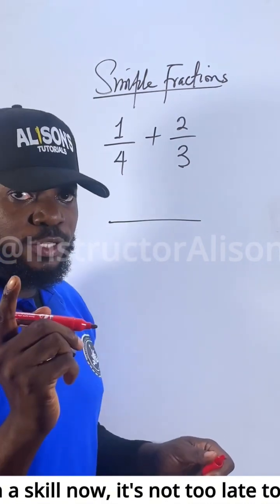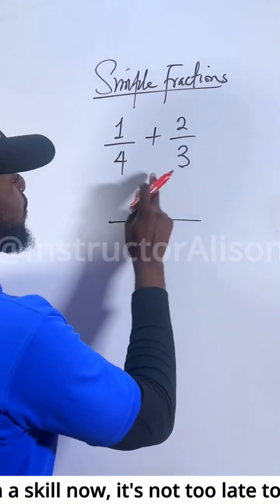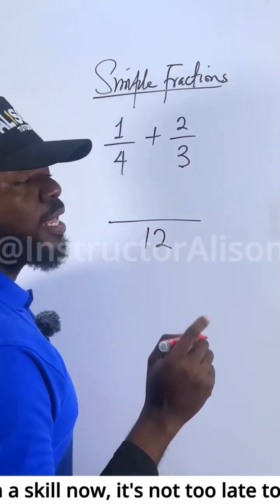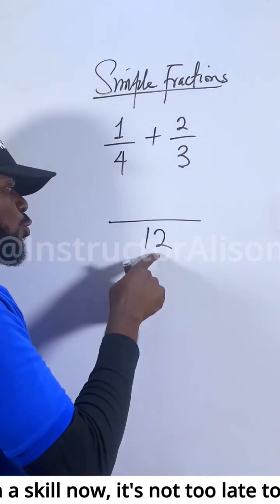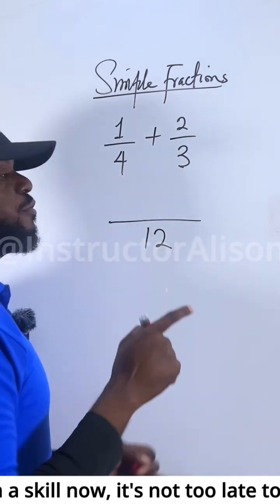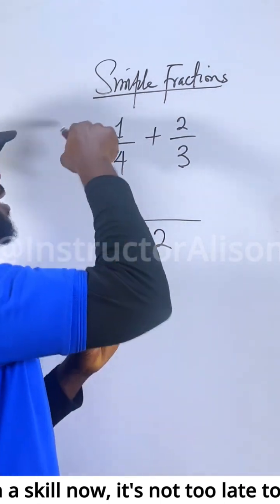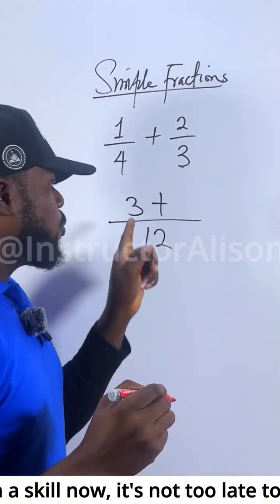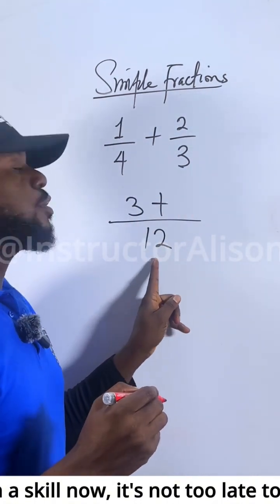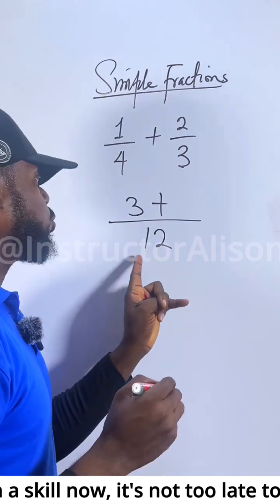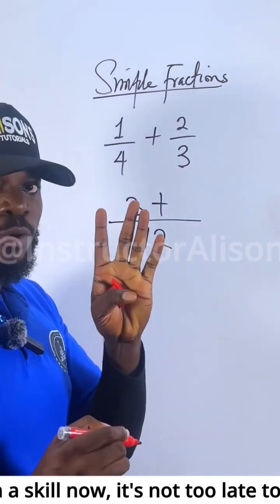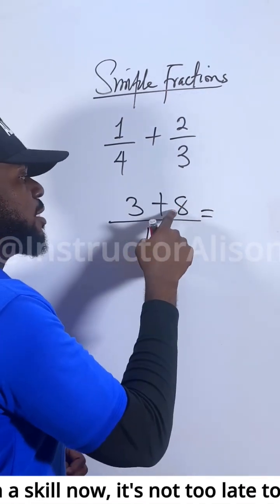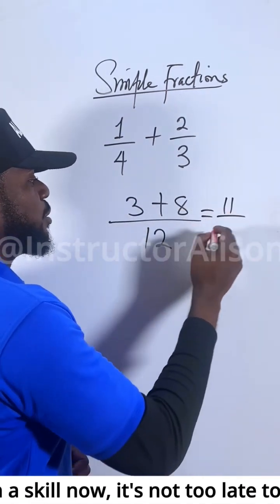Normally, if you want to solve this one and find the LCM — the way they teach you in secondary school — the LCM of 4 and 3. Now, 4 times 3 gives you 12. 12 divided by 4 gives you 3, and 3 times 1 gives you 3. Then 12 divided by 3 gives you 4, and 4 times 2 gives you 8. Finally, 3 plus 8 gives you 11, divided by 12.